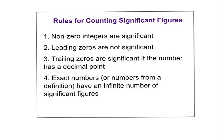Here are the rules for counting sig figs. Non-zero integers (1–9) are always significant. Leading zeros — like in 0.0045 — are not significant. Trailing zeros are significant only if the number has a decimal point; for example, 2300 without a decimal point has only two sig figs. Exact numbers or definitions — like 100 centimeters equals 1 meter — have an infinite number of sig figs and don't impact your calculations.